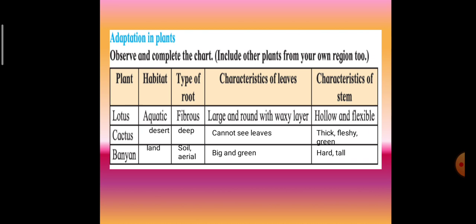The banyan tree: its habitat is land. How are the types of root? Both - in the soil as well as aerial. The leaves are big and green. And the characteristic of stem: hard and tall.